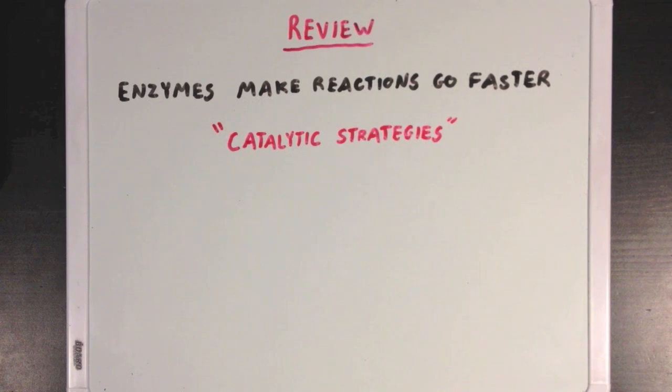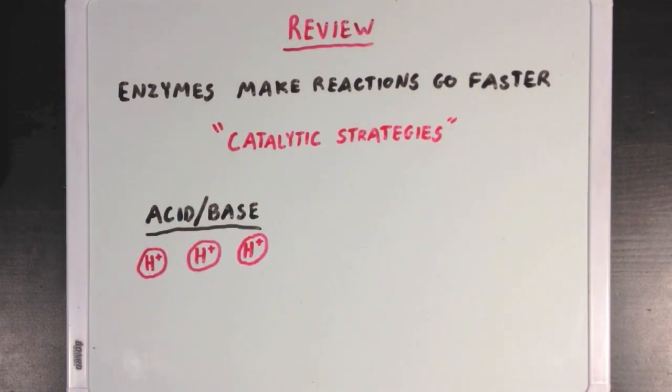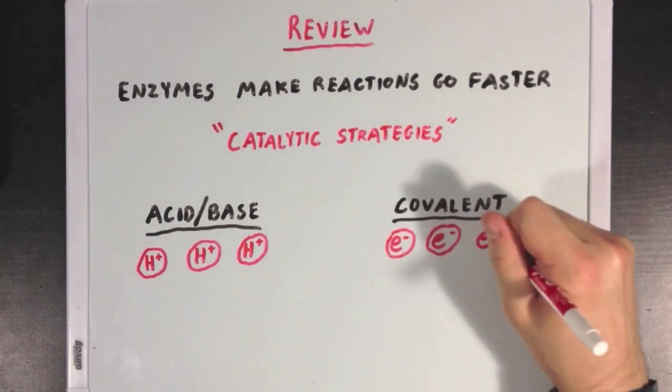Now there are lots of different catalytic strategies that enzymes use, but a couple of the key ones are acid-base catalysis, where enzymes use their acidic or basic properties to make reactions go faster by helping out with proton transfer. There's also covalent catalysis, where enzymes covalently bind a reacting molecule to help with electron transfer.